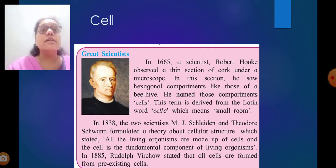Who discovered cell? In 1665, Robert Hooke observed a thin section of cork under a microscope. In this section, he saw hexagonal compartments like those of a beehive. He named those compartments cells. This term is derived from the Latin word cella, which means a very small room.